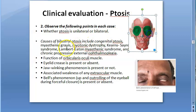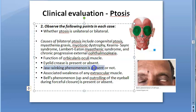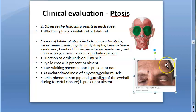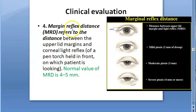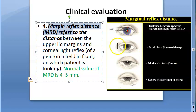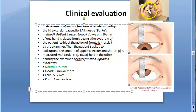They check the orbicularis oculi muscle, whether eyelid creases are present or not, jaw-winking phenomenon, and Bell's phenomenon — the up and out rolling of the eyeball due to forceful closure. Then they measure the degree of ptosis: mild, moderate, or severe. They also check the margin reflex distance — the distance between the lid margin and the corneal reflex — with a normal value of around 4 to 5 millimeters.